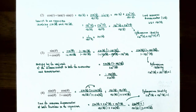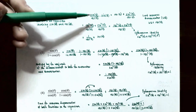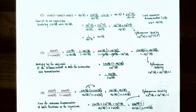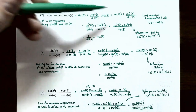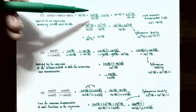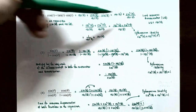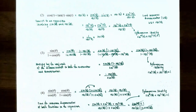Number two: simplify cosine of t plus tangent of t times sine of t. We rewrite tangent of t as sine of t over cosine of t, so the expression becomes cosine of t plus (sine t / cos t) times sine of t, which gives cosine of t plus sine squared of t over cosine of t. The least common denominator is cosine of t, so we rewrite cosine of t as cosine squared of t over cosine of t.